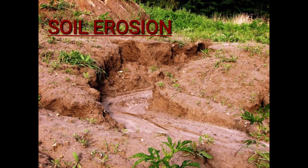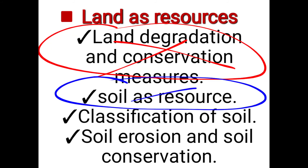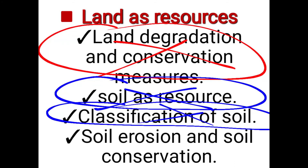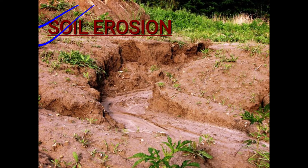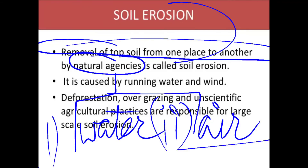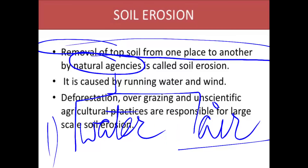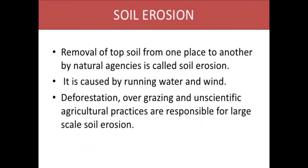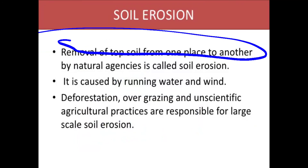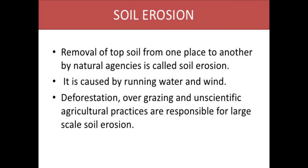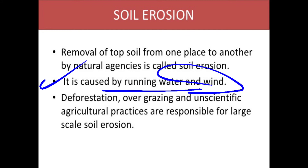Now let's start with our third topic: soil erosion. We have completed topic two on soil types and now move to soil erosion. Soil erosion is the removal of the top soil from one place to another by natural agencies — it is caused by running water and wind.